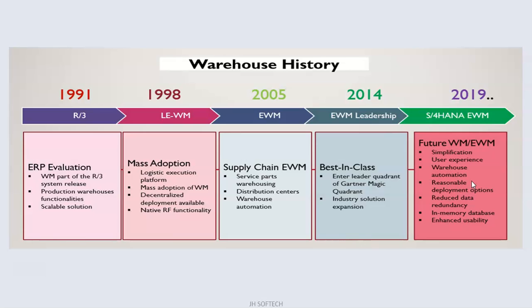In 2005, SAP introduced Supply Chain EWM — Extended Warehouse Management — which included service parts, warehousing, distribution centers, and warehouse automation. Then in 2014, EWM leadership was established with best-in-class recognition, entry into the Gartner Magic Quadrant leader quadrant, and industry solution expansion was brought into availability.